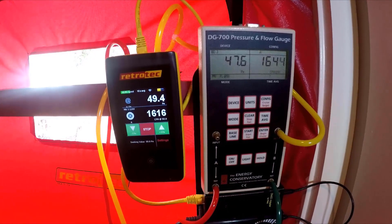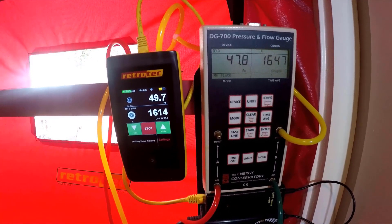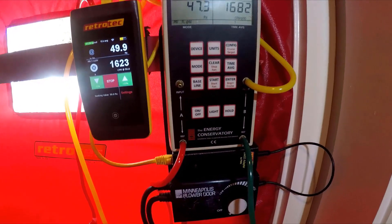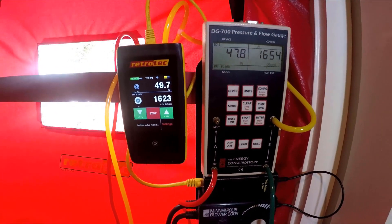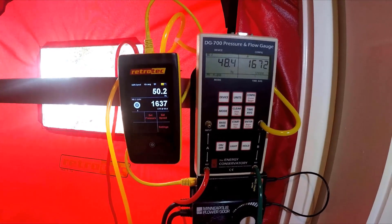And again the DM32 doesn't need this extra tubing because it feels that positive pressure on that port and it knows to remove that pressure from the equation so that it can get a correct reading without having to run an extra tube.